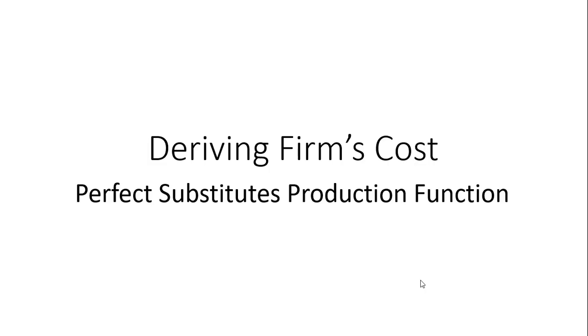Hello, in this video we're going to derive the firm's cost function from a perfect substitutes production function. Here is our perfect substitutes production function where L and K represent units of labor and units of capital. Let's assume that the wage is $20 and the rental rate or price of capital, r, is $10.